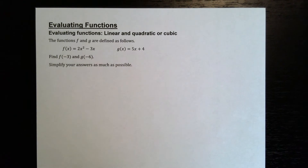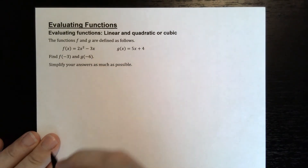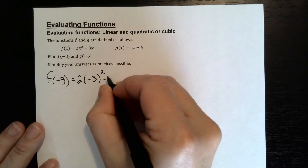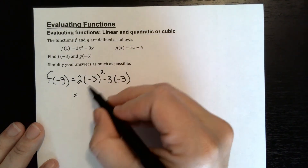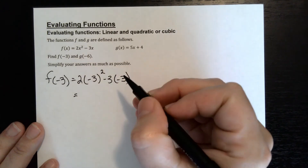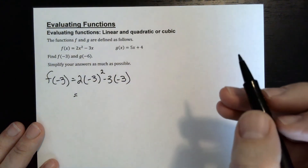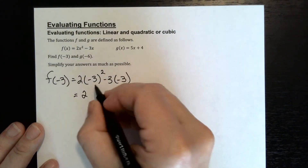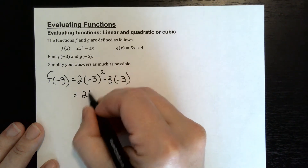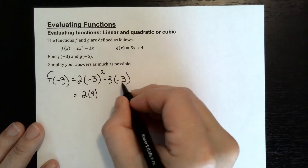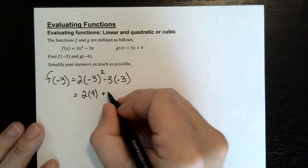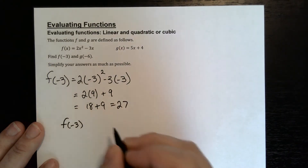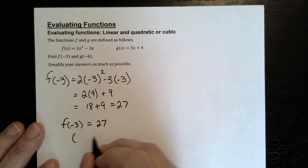We have f of x is equal to 2x squared minus 3x, and we're asked to find f of negative 3. So f of negative 3 is equal to 2 times negative 3 squared minus 3 times negative 3. Follow order of operations — exponents first: negative 3 squared is positive 9. So we get 2 times 9 which is 18, plus 3 times negative 3 is positive 9. That gives us 18 plus 9, which is 27. So f of negative 3 is equal to 27.